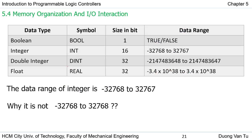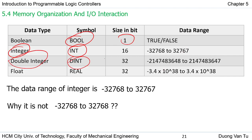Now we can see the data types in the PLC. There are four types of data or memory devices. First, Boolean: symbol BOOL, size 1 bit, data range is 0 or 1. Second, Integer: symbol INT, 16 bits, range from -32,768 to 32,767. Third, Double Integer: symbol DINT, 32 bits with corresponding range. Finally, Float or Real numbers: also 32 bits with a corresponding floating-point range.